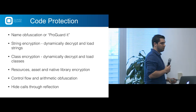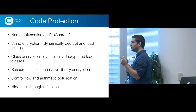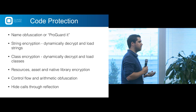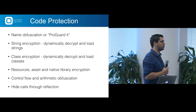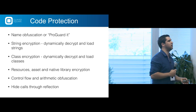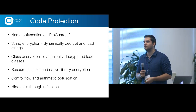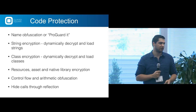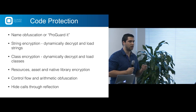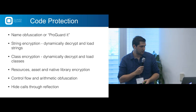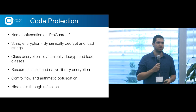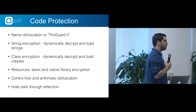String encryption: you can dynamically decrypt and load strings. At build time you encrypt the string and put a decryption method in your code. When you look statically at the code you won't find the string, but it gets decrypted at runtime and put into memory. You can do the same for code — encrypt all classes, decrypt them at runtime, and load them into memory. This means the code is not available in your app during static analysis — it's only available in memory at runtime. You can do the same for resources, assets, and native library encryption.